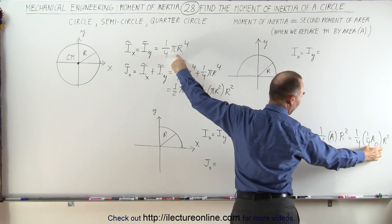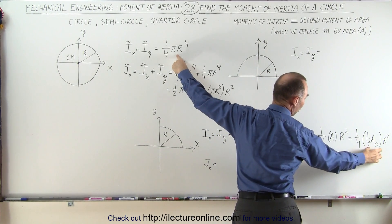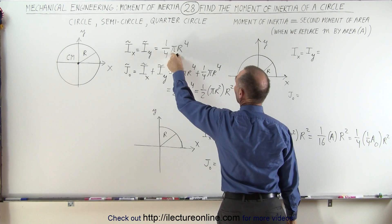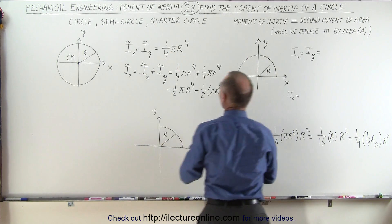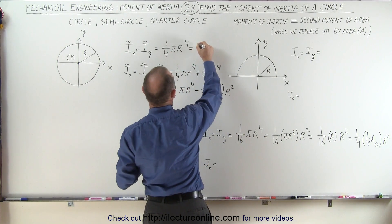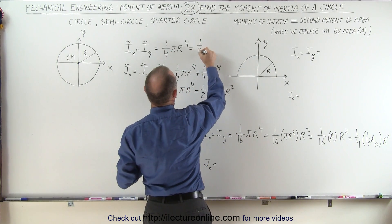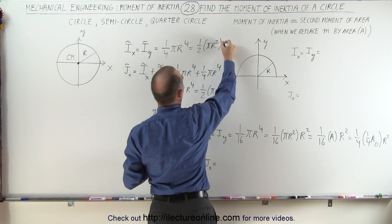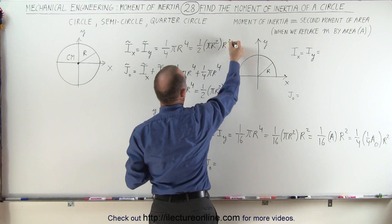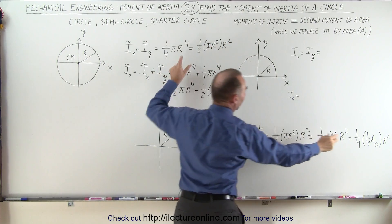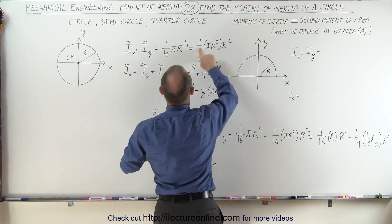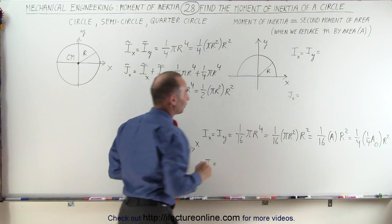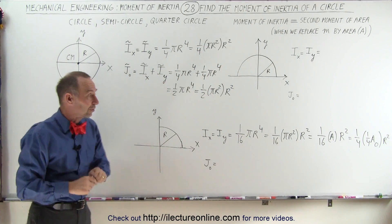So we have one-quarter the area of a quarter circle times r squared, and one-quarter the area of a full circle times r squared. Let's write that down: one-fourth times pi r squared times r squared. You can see the similarity between those two equations.